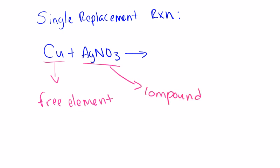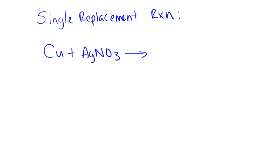Every single replacement reaction you're going to see in Chemistry 1 is going to start out this way, where you have a free element and a compound, and they're going to be making some type of new bond as the reaction goes on. In a chemical reaction, bonds are made and broken apart. So in order to make a new bond, we need to first break these apart. Copper is a cation typically when it makes a bond — we know that because it's a metal, and all metals lose their electrons to form cations.